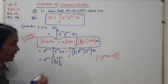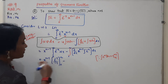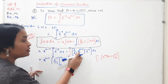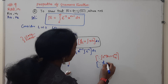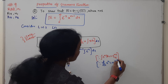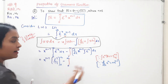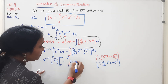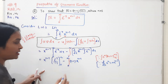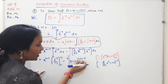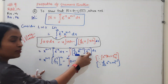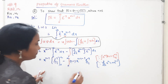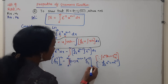Simplifying: x to the power of n times e to the power of minus x divided by minus 1, with limits 0 to infinity. Then, minus of integral from 0 to infinity of n minus 1 into x to the power of n minus 2, into e to the power of minus x, dx.